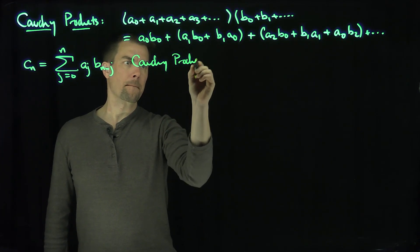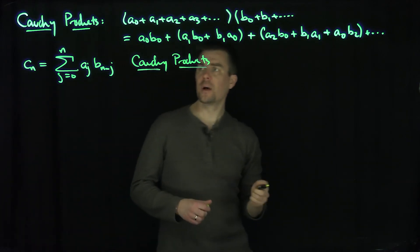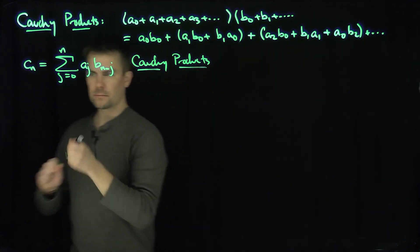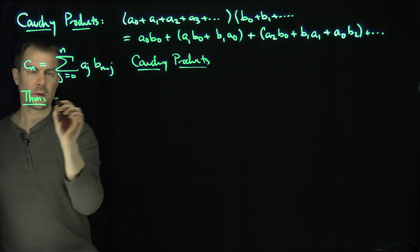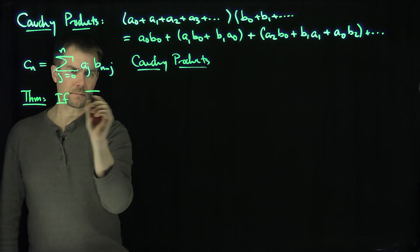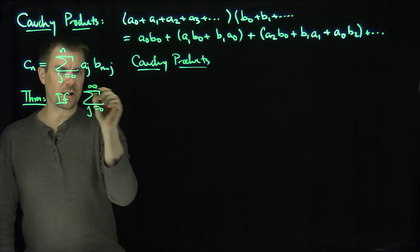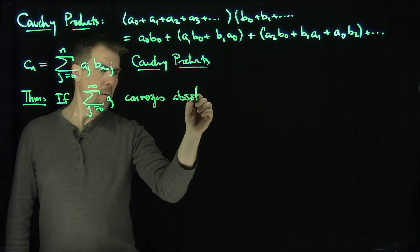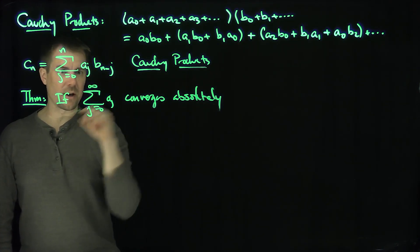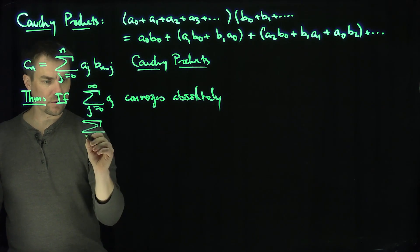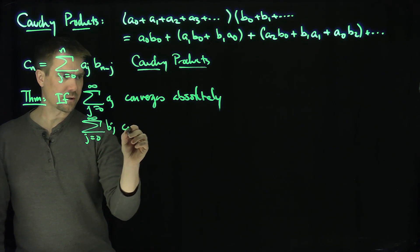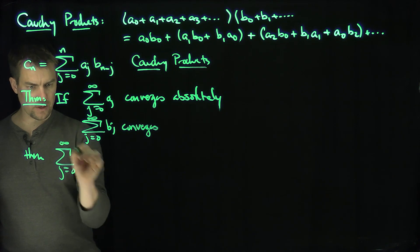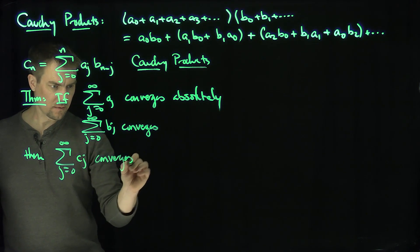There's a theorem about Cauchy products. Here's the theorem: if the sum as j goes from 0 to infinity of aj converges absolutely — in other words, the absolute value series has to converge — and if just the sum of the bj's converges plainly, then the sum of the Cauchy products converges, i.e., the sum as j goes from 0 to infinity of cj converges.